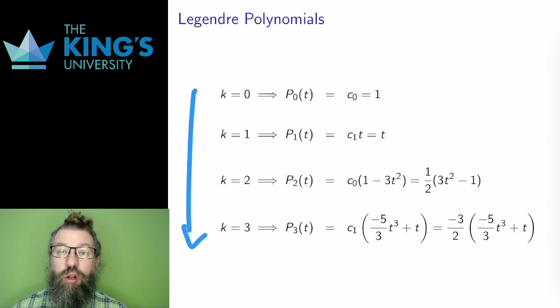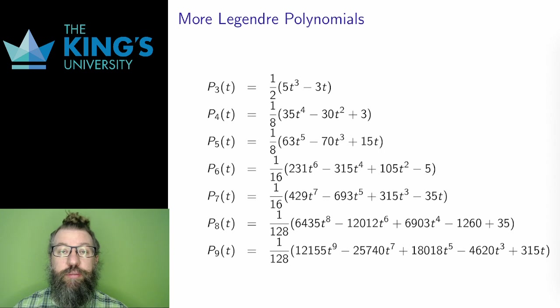Remember, I get one polynomial for each k, so I have an infinite family of polynomials, one for each natural number. In the first, I choose c0 equals 1, in the second, c1 equals 1, in the third, c0 equals negative 1 half, and in the last, c1 equals negative 3 halves, to get these polynomials. And I'll explain why these particular choices matter shortly.